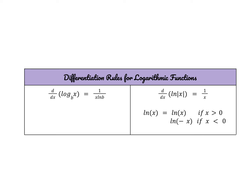Here are our differentiation rules for logarithmic functions. The derivative of log base B of x is 1 over X times the natural log of B. The derivative of the natural log of x is 1 over X. Notice the absolute value signs around X, because the value within a logarithm must be positive. So if you see the natural log of negative X, just assume X is negative so the result is positive, but the derivative is simply 1 over X.